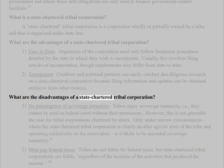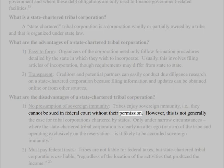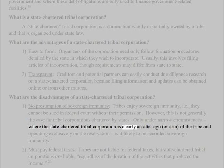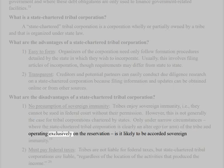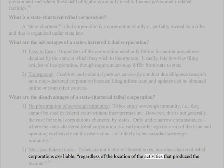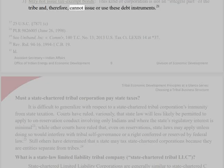What are the disadvantages of a state chartered tribal corporation? 1. No presumption of sovereign immunity. Tribes enjoy sovereign immunity, i.e., they cannot be sued in federal court without their permission. However, this is not generally the case for tribal corporations chartered by states. Only under narrow circumstances, where the state chartered tribal corporation is clearly an alter ego or arm of the tribe and operating exclusively on the reservation, is it likely to be accorded sovereign immunity. 2. Must pay federal taxes. Tribes are not liable for federal taxes, but state chartered tribal corporations are liable, regardless of the location of the activities that produced the income. 3. May not issue tax-exempt bonds. This kind of corporation is not an integral part of the tribe and, therefore, cannot issue or use these debt instruments.